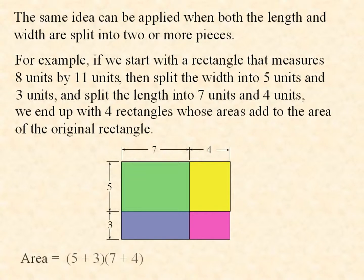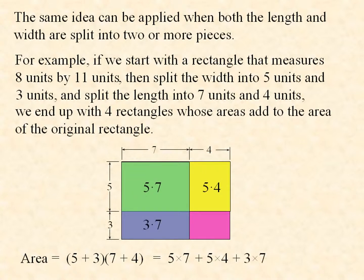The area is equal to the width 5 plus 3 times the length 7 plus 4. The area of the green rectangle is 5 times 7. The area of the yellow rectangle is 5 times 4. And of the blue, 3 times 7. And the magenta, 3 times 4. These areas add up to the area of the whole rectangle, which is expressed by the quantity 5 plus 3 times the quantity 7 plus 4. So this is an extension of the distributive property.